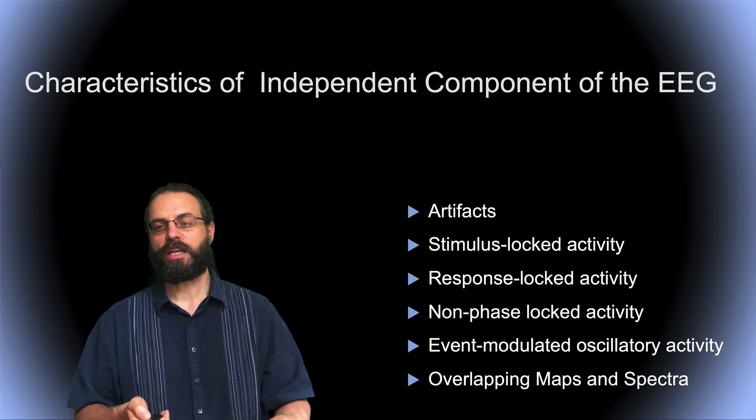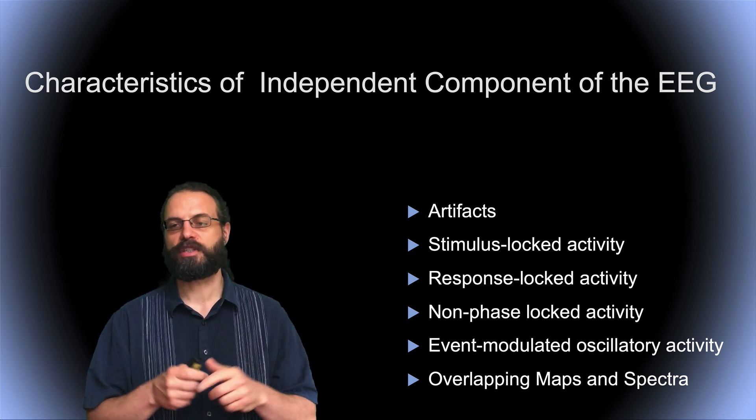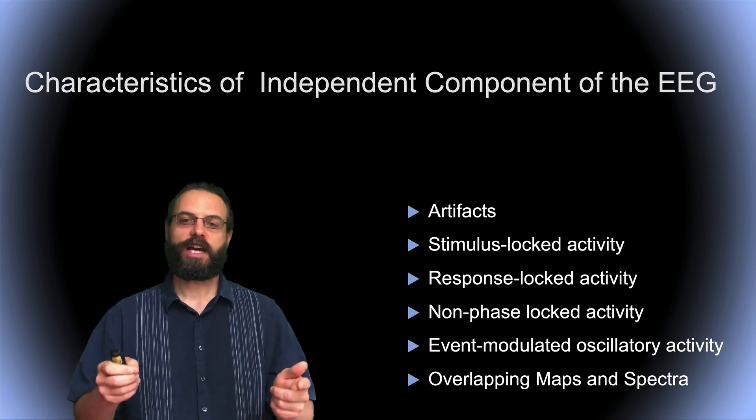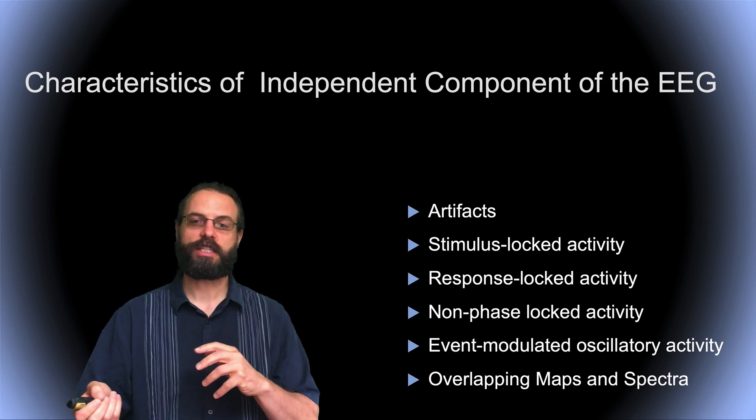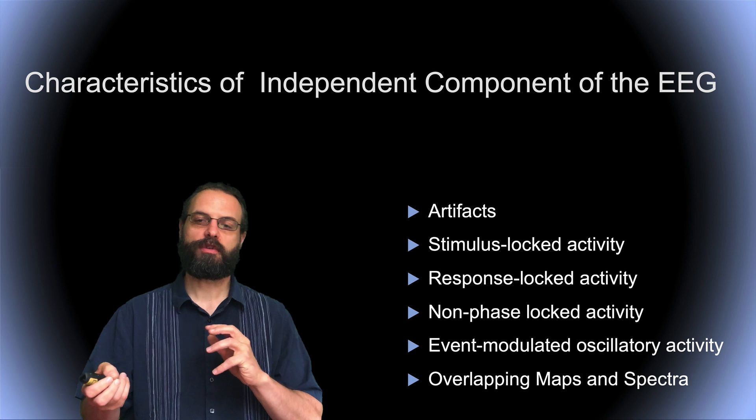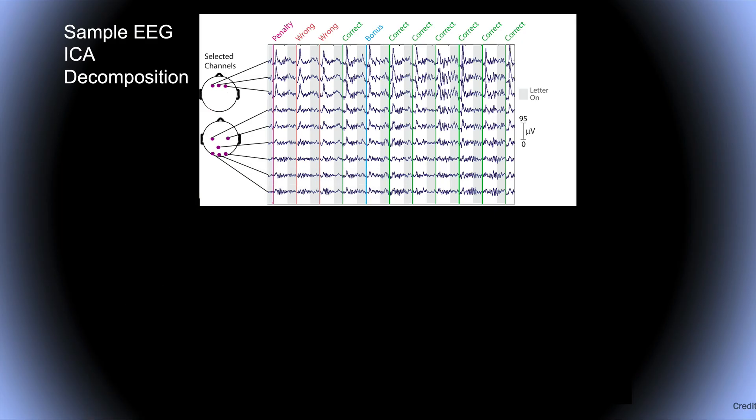The types of independent components we can see in EEG include many different types: artifacts, stimulus locked activity, response locked activity, non-phase locked activity, event related and event modulated oscillatory activity, and overlapping maps and spectra.